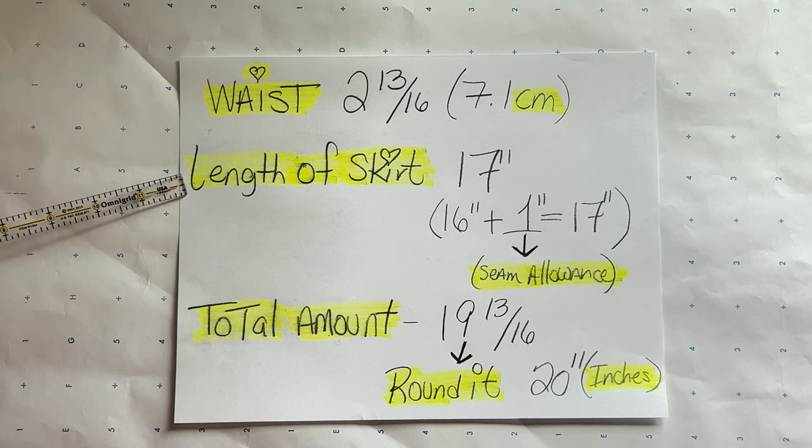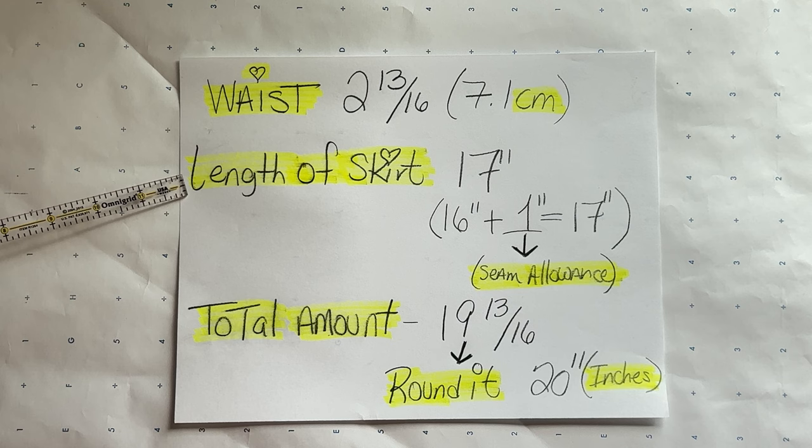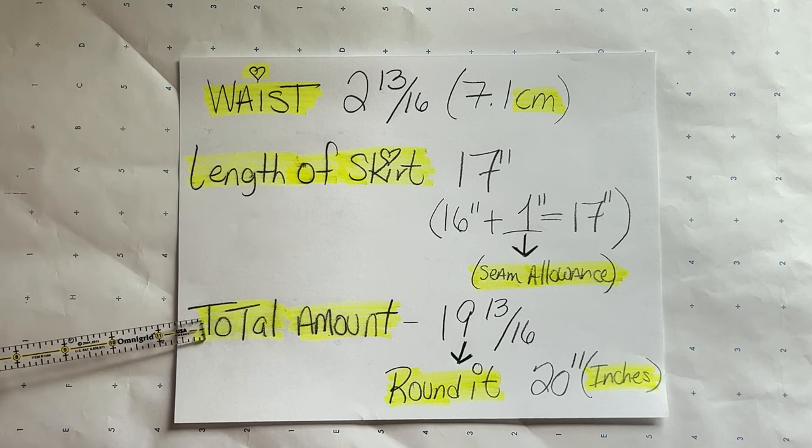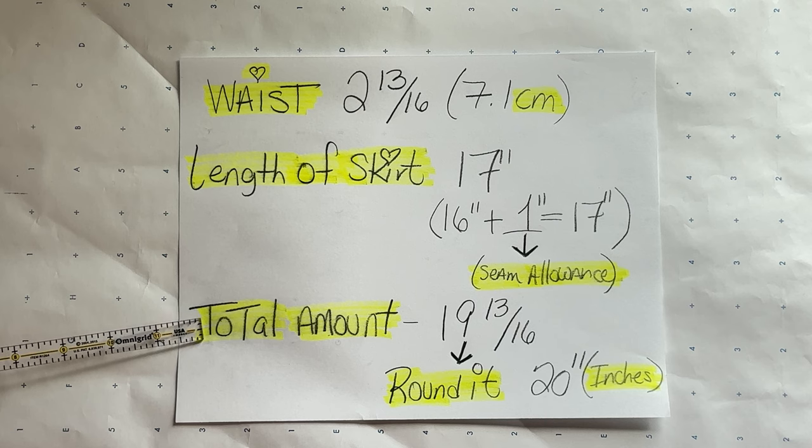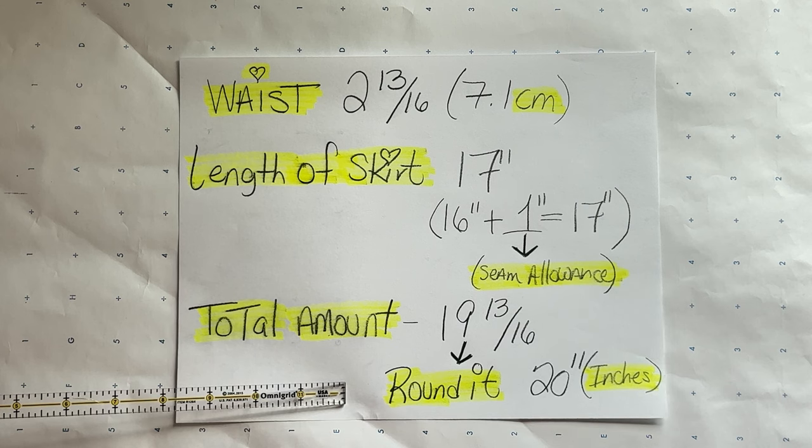Next we're going to calculate how much paper we need to make the pattern. The waist is 7.1 centimeters and the length of the skirt is 17 inches—that's 16 inches plus 1 inch for seam allowances. The total amount will be 19 and 13/16, but you can round it off to 20 inches.